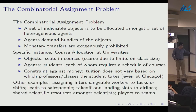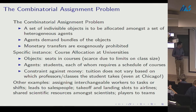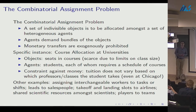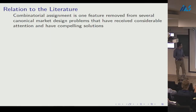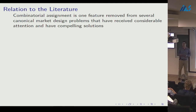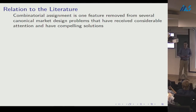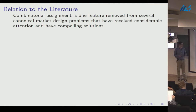Other examples with a similar flavor include assigning workers to shifts or certain resource allocation problems in science. Combinatorial assignment is one feature removed from many problems we know well and that have compelling solutions.